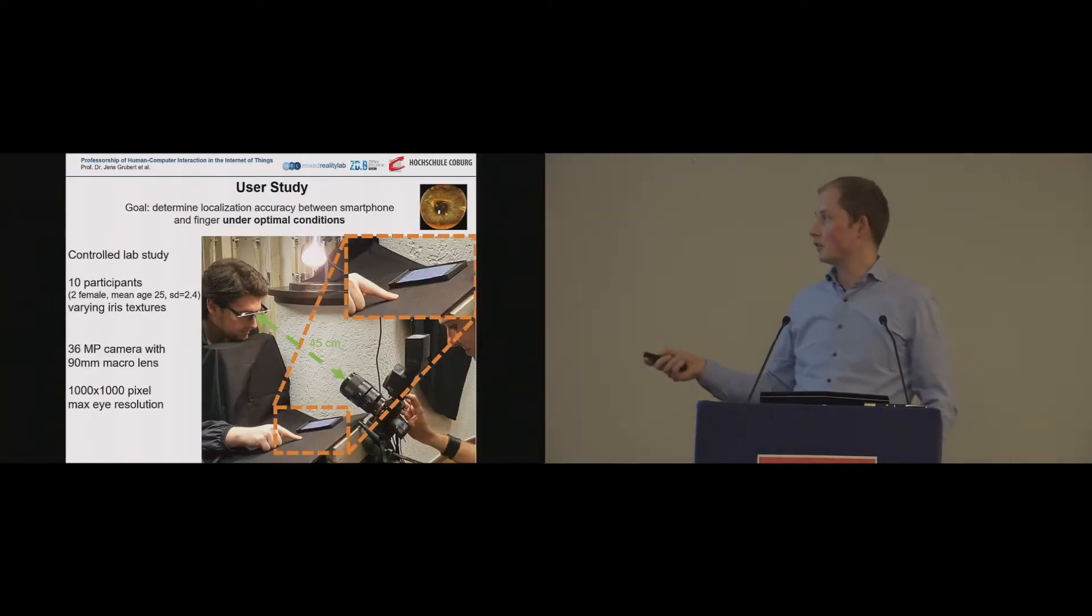And this is what you can see here. So we have participants, 10 participants who were positioned very carefully on a chin rest and a smartphone, and they had to put their finger in certain positions. I will tell you more about that in a second. And then, because we weren't sure on which resolutions we actually would need, we used a very high resolution imager and macro lens to emulate high resolution future image systems. So we had a fancy SLR with 36 megapixels, 90 millimeter macro lens pointing directly at the face of the user. And this resulted then in a maximum eye resolution of approximately 1,000 by 1,000 pixels for that area.